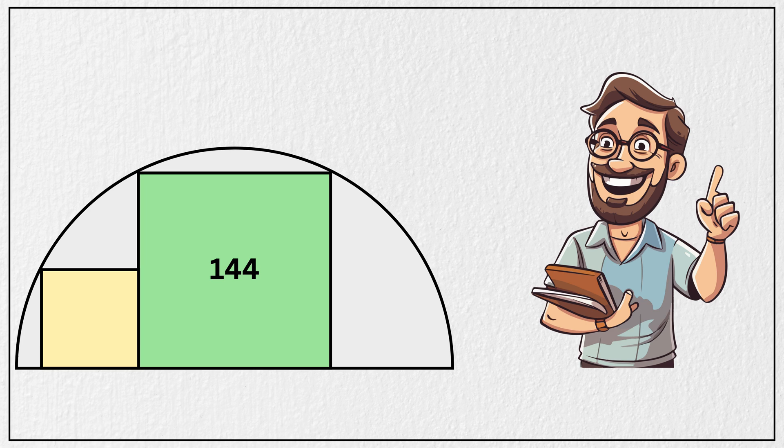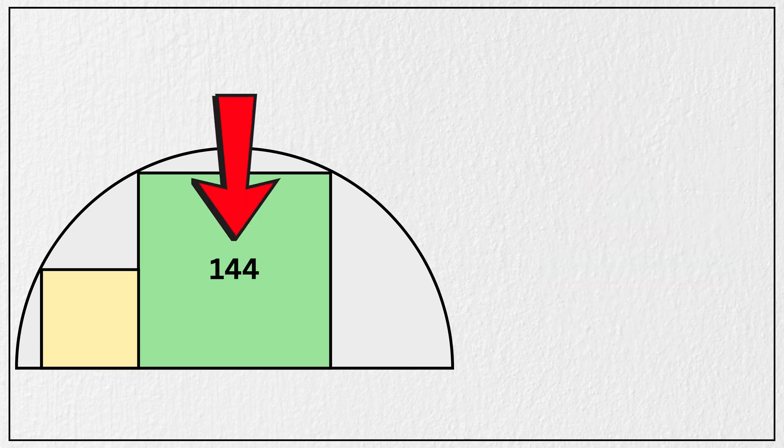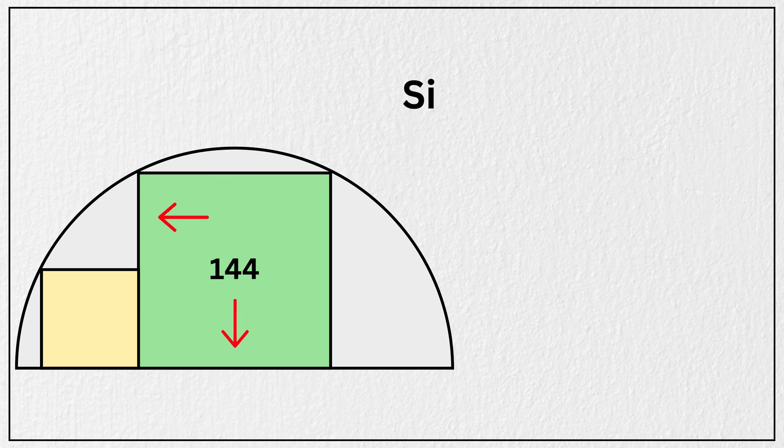Alright, let us solve it together. We are told that the area of the large square is 144 square units. That means its side length must be the square root of 144, which is 12 units.